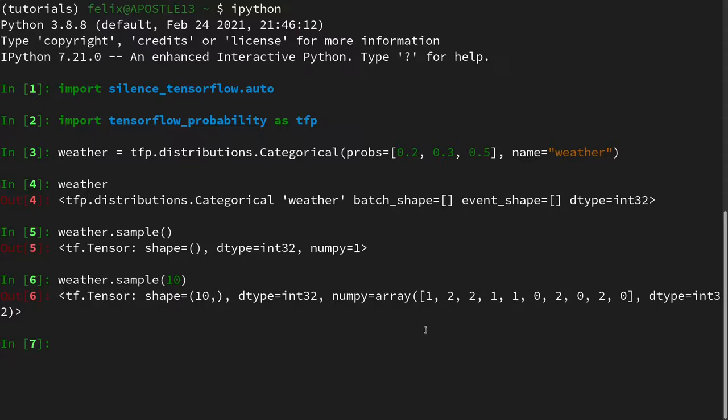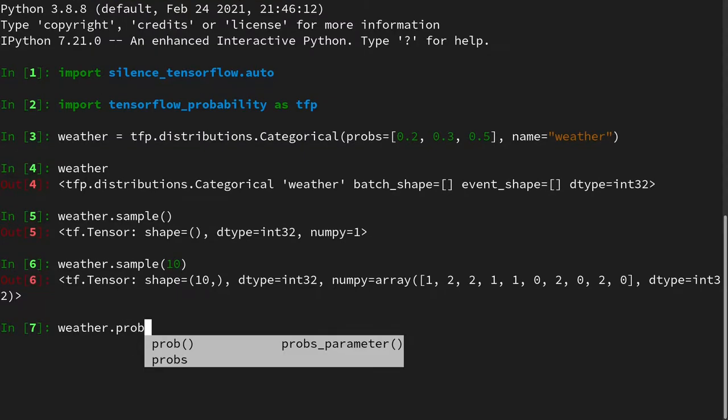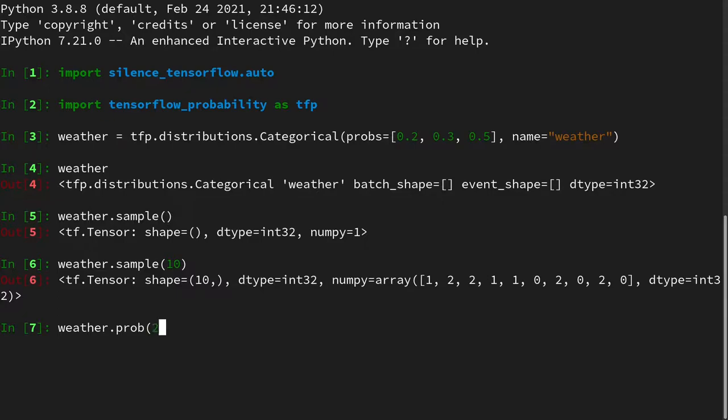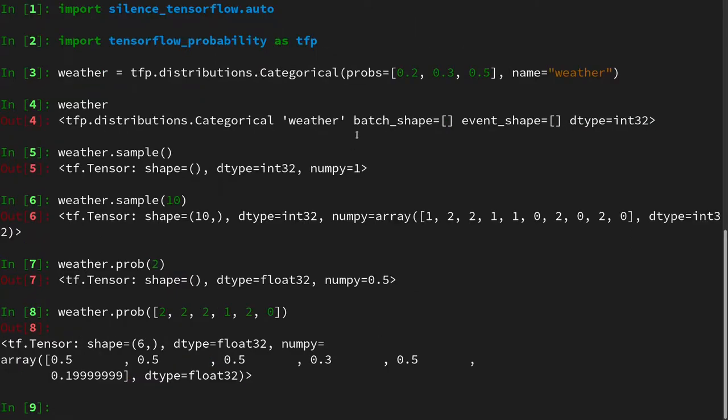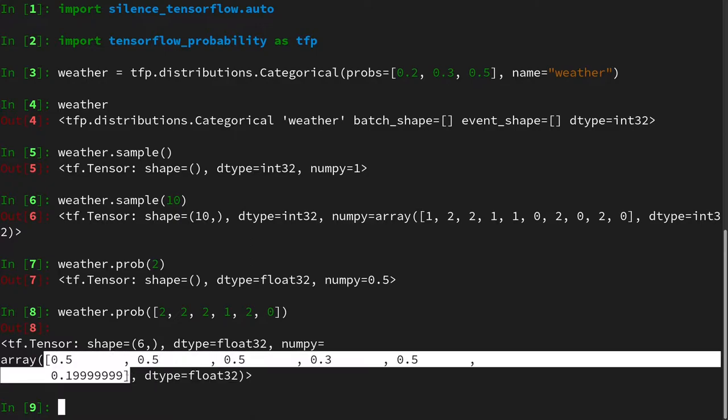And we can also, of course, use this distribution in order to assess probability. For instance, if we were to assess the probability of the sunny day, we see it's 0.5. And we can also assess the probability of some day observations, like, say, sunny, sunny, sunny, rainy, sunny, cloudy. And then we get the probability of each.